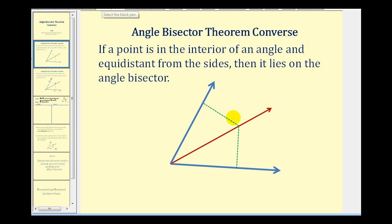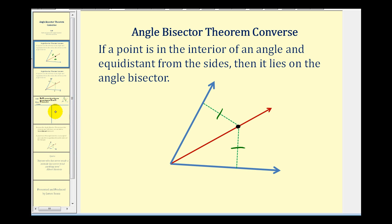If we consider a point in the interior of a larger blue angle that is equidistant to the blue rays forming the angle — meaning this green segment is congruent to this green segment — then this black point must lie on the angle bisector, shown here in red. Let's see if we can prove this.